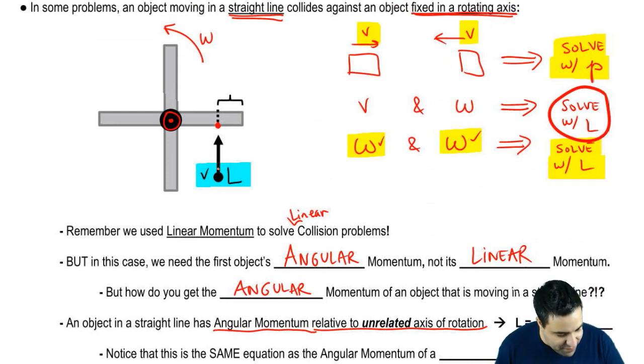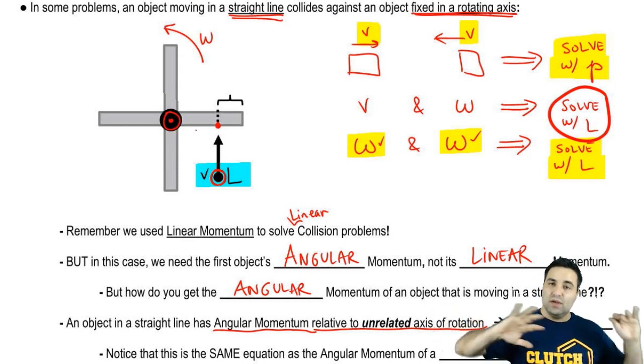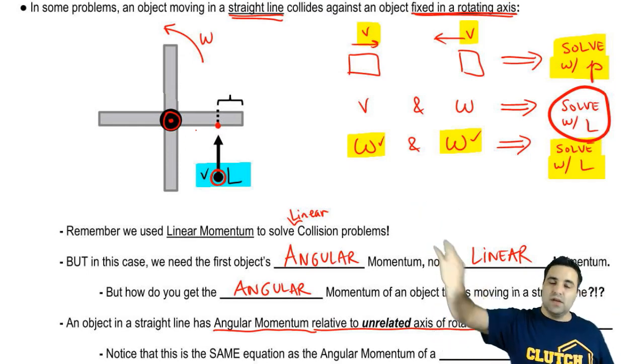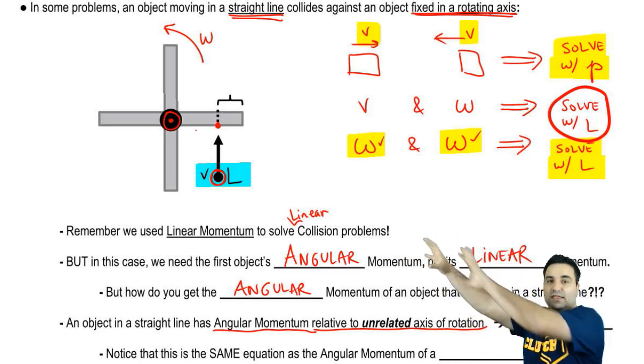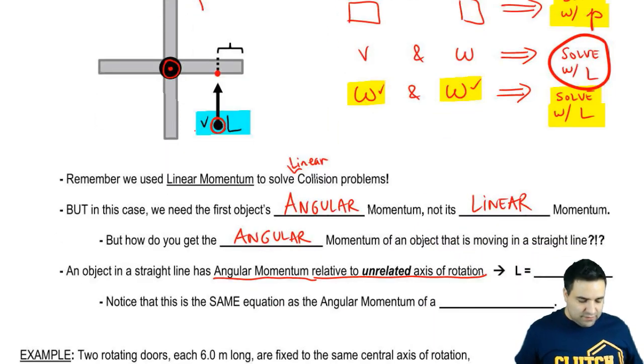Well, an object in a straight line has angular momentum relative to an unrelated axis of rotation. You can actually find the angular momentum of this guy relative to this axis, even though they haven't really collided yet. So it's an unrelated axis. Let's find an angular momentum relative to it.